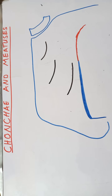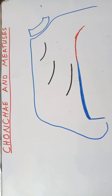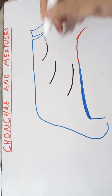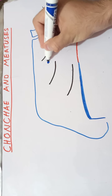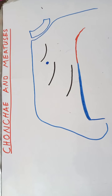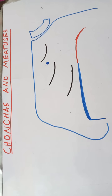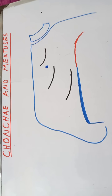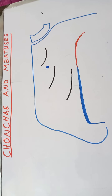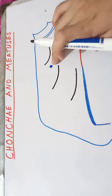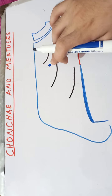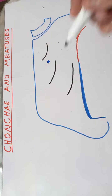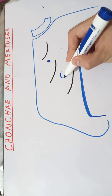In the superior meatus there is only one structure: the opening of the posterior ethmoidal sinus. As you know, the ethmoidal sinuses are three in number — anterior, middle, and posterior — and their openings are separate from each other. So in the superior meatus, there is only the opening of the posterior ethmoidal sinus.